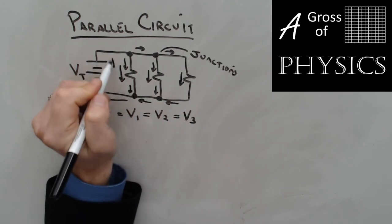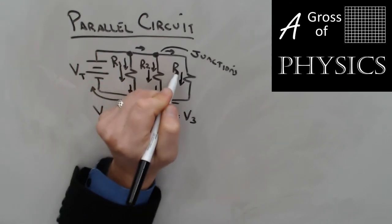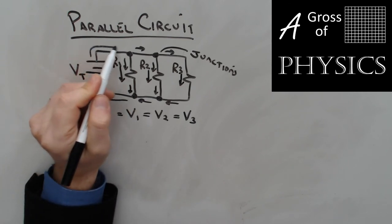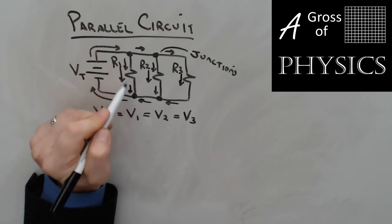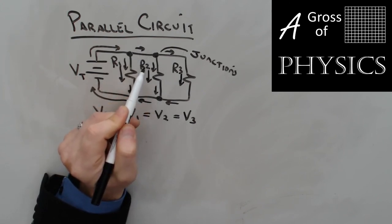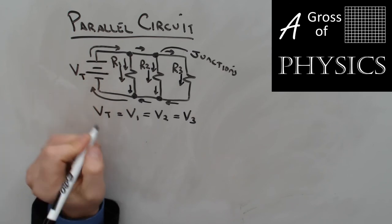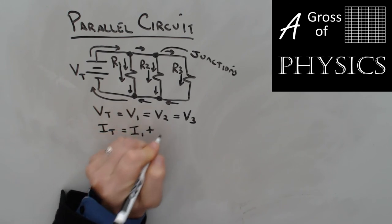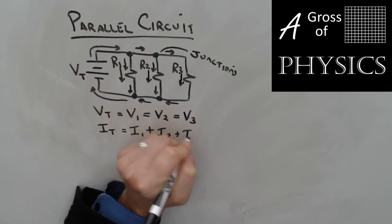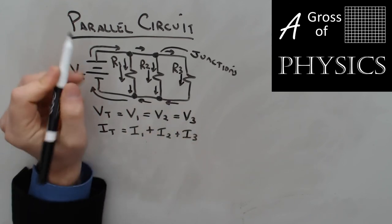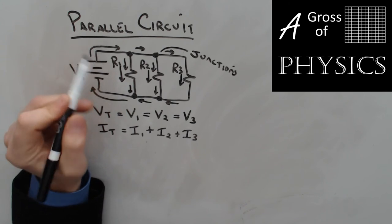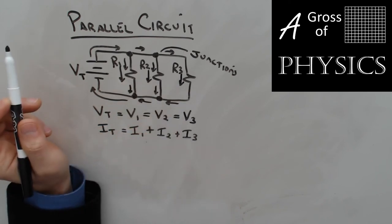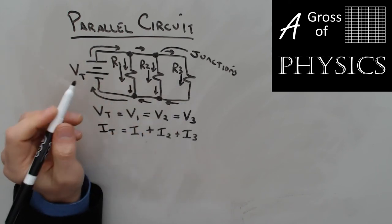Labeling the resistors R1, R2, and R3: when the current flows to the first junction, some goes through R1 and the rest continues to split between R2 and R3. The total current is the sum of the currents flowing through each component. For example, if we had 10 amps and 1 amp goes through R1, there are 9 left for R2 and R3 — maybe 3 through R2 and 6 through R3. The total is still 10. This is conservation of charge.